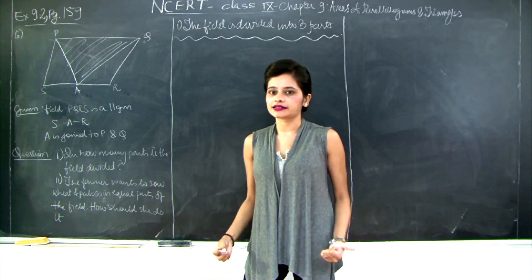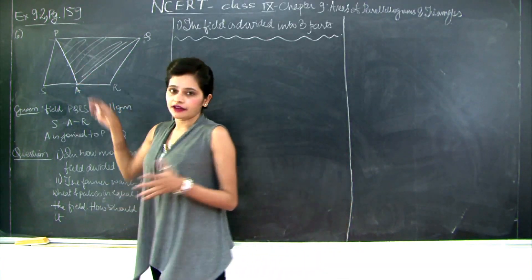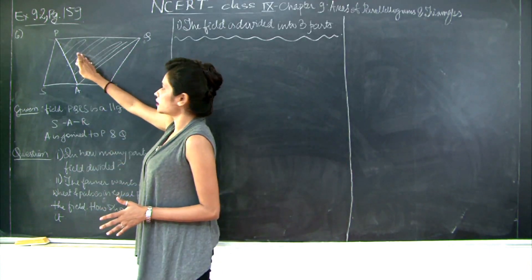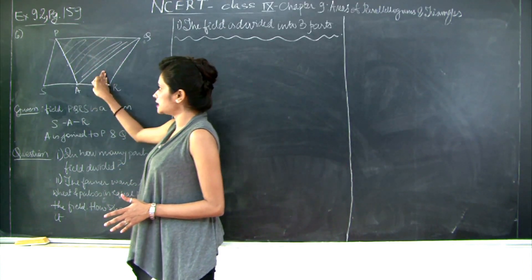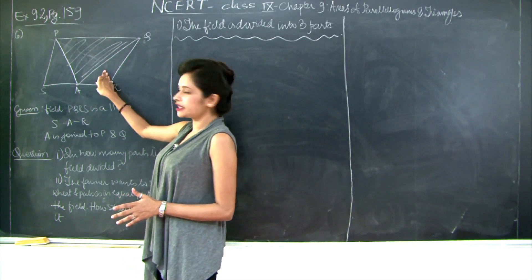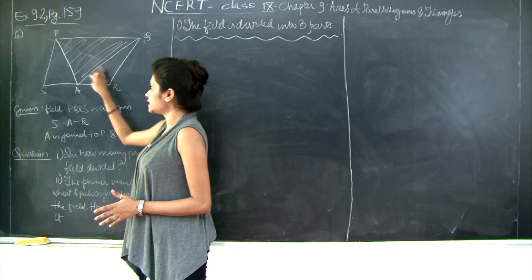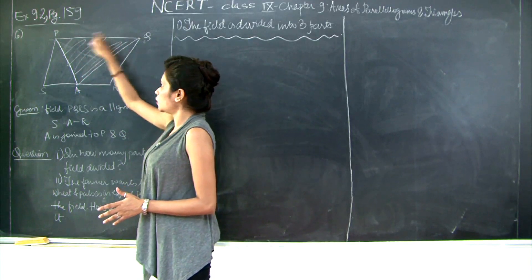Therefore the remaining portion is going to be the remaining half of PQRS. Therefore if the farmer wants, she can grow wheat in this section and pulses in these two sections, or she can grow the wheat in these two sections and pulses alone in this section.